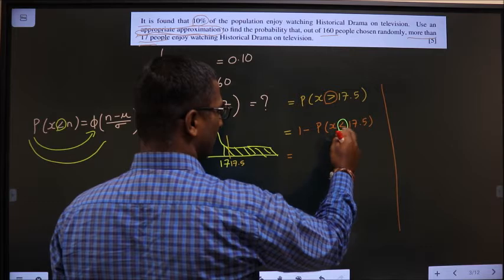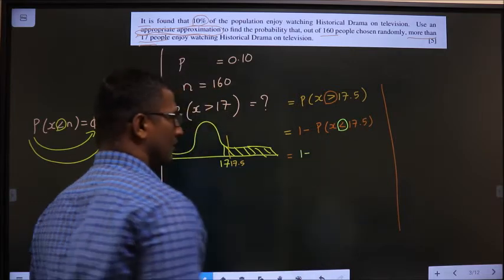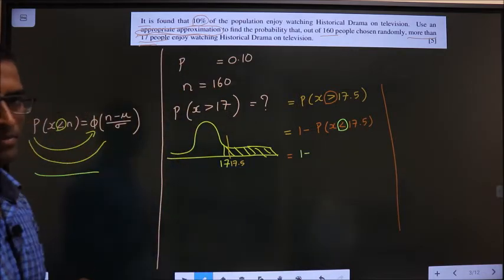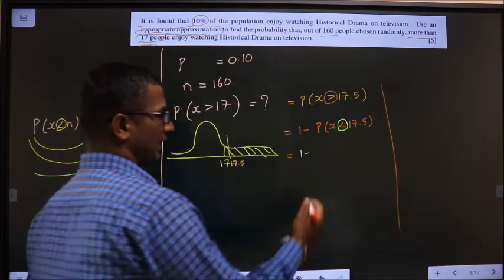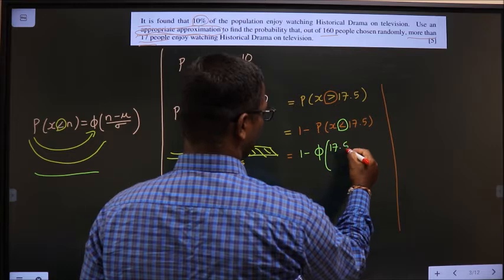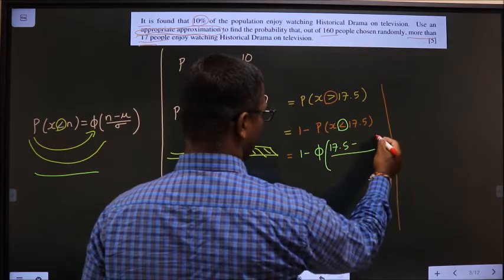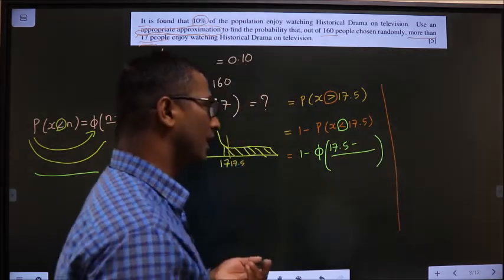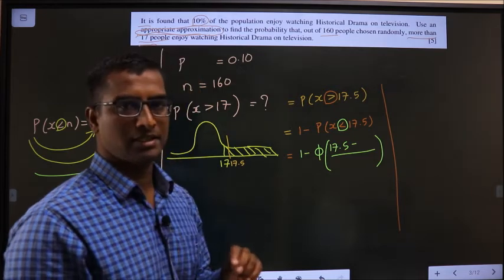Analyze. The symbol is less than, so P will get converted to phi. So phi of 17.5 minus mean by standard deviation. Now I also have to find mean and standard deviation.